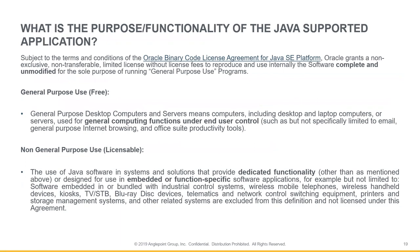Here's where it gets tricky — what is the purpose and functionality of Java supported applications? The BCLA grants a non-exclusive, non-transferable, limited license without fees to reproduce and use internally the software, complete and unmodified, for the sole purpose of running general purpose use programs. General purpose use is left somewhat open, but examples given are email, internet browsing, and office suite productivity tools. The BCLA says 'such as,' but is not specifically limited to those examples, so it's vague and open to interpretation.